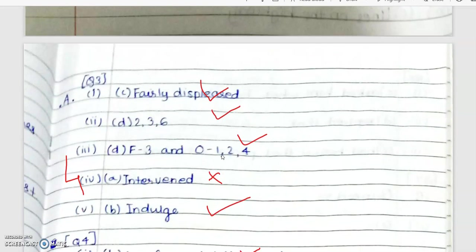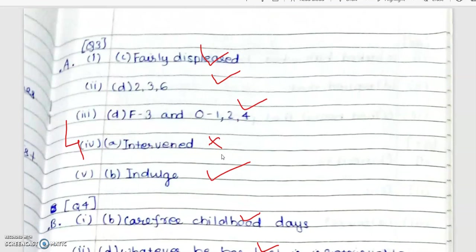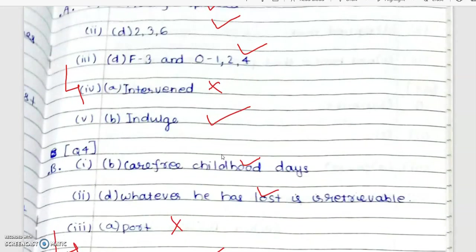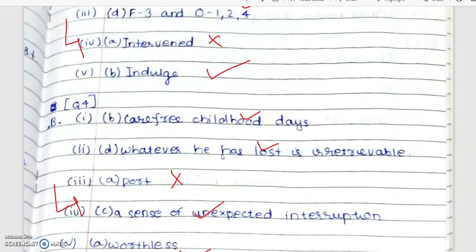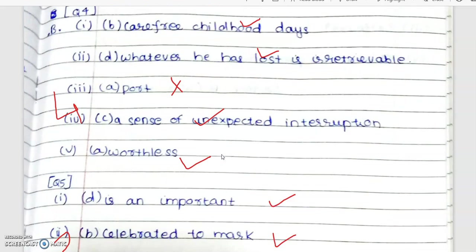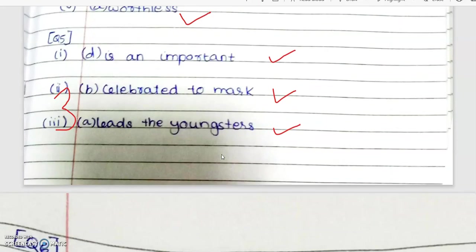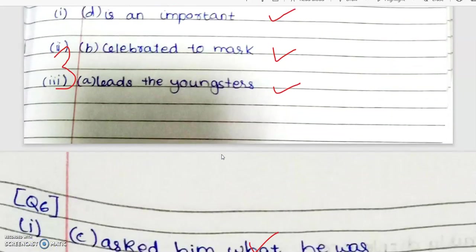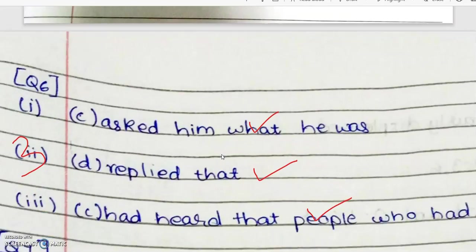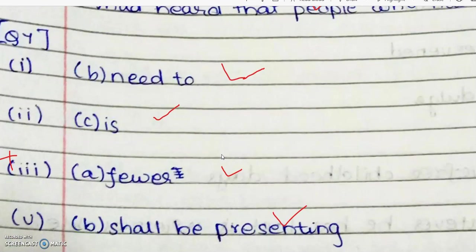Question number three, the literature MCQ — give suggestions on how the student can improve. Again, for literature and poetry, suggest ways of improving. The student has done quite well in grammar.